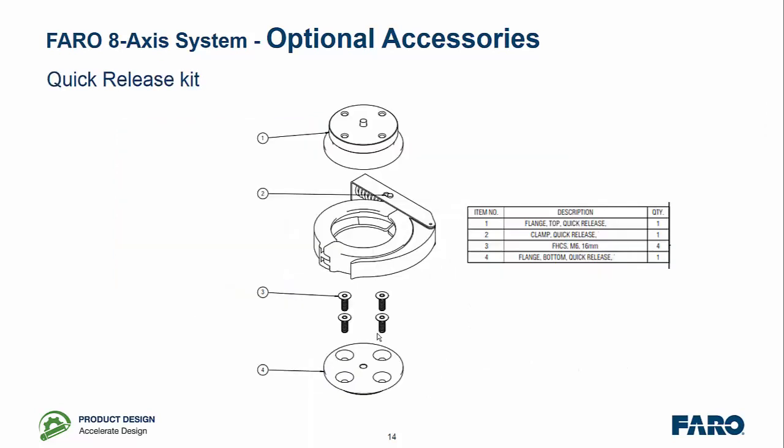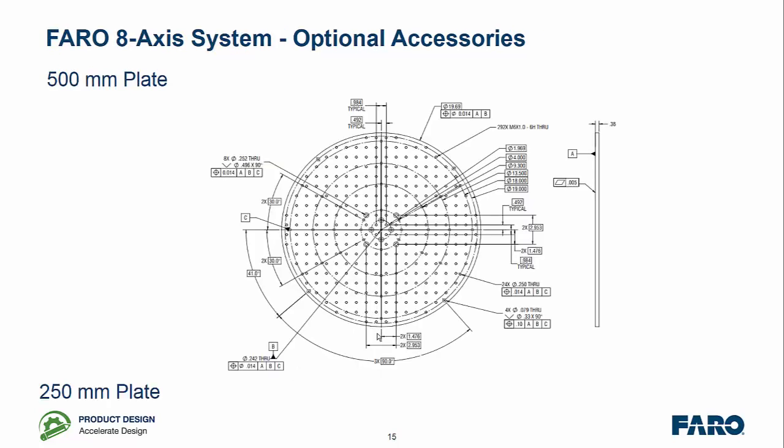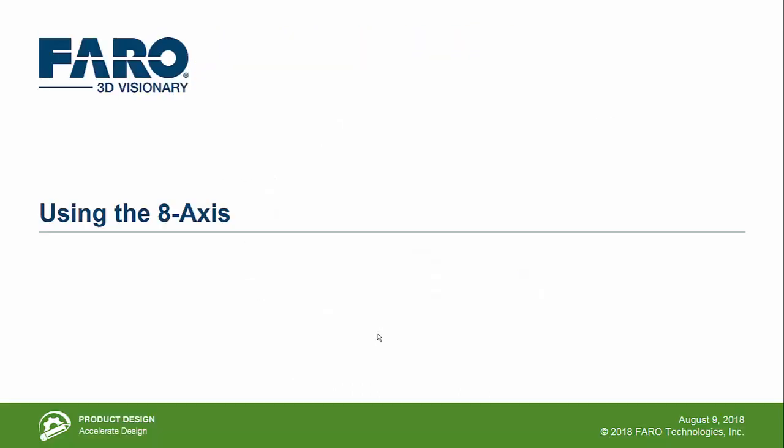For ease of use, if you're doing repeat scans or repeat inspections, we also have a quick release kit. So you could have a variety of mounting plates with a quick release kit to quickly remove and add different accessories to them. The plate also comes in a 500mm plate for scanning those larger objects.